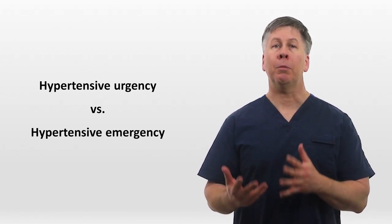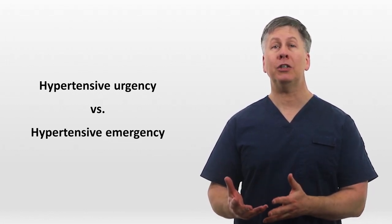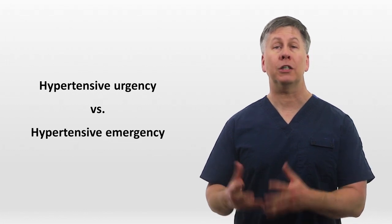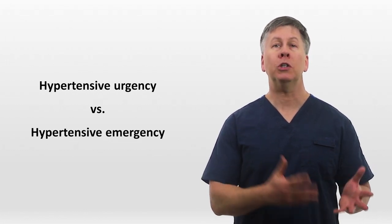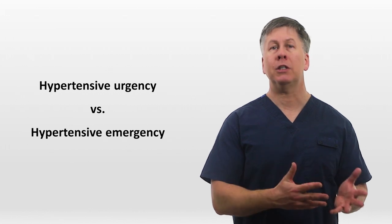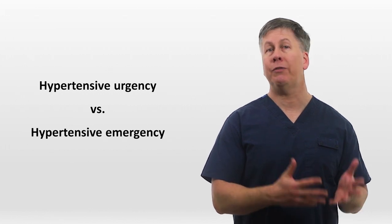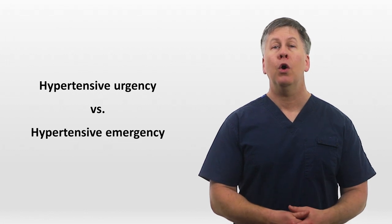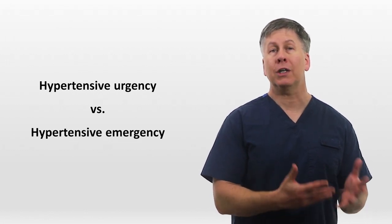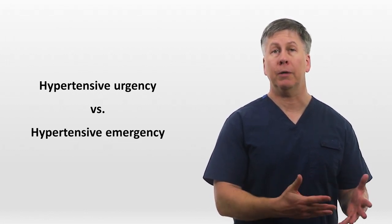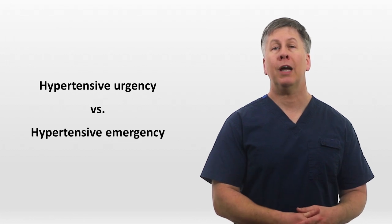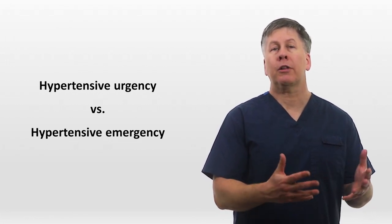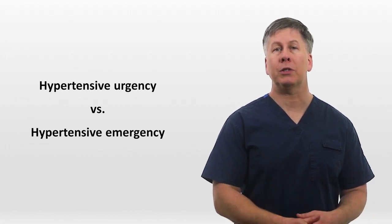In urgency, the blood pressure is extremely elevated but the patient is without symptoms or evidence of secondary organ dysfunction, whereas in emergency, the patient is either experiencing symptoms such as severe headache, confusion, chest pain, or shortness of breath, or the patient has objective evidence of organ damage such as hematuria, retinal hemorrhages, and elevated troponin, or has developed something like the pregnancy complication of preeclampsia.